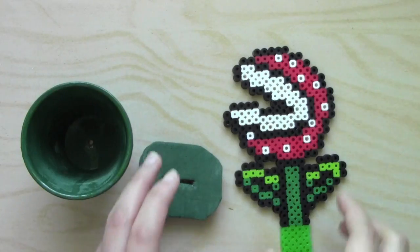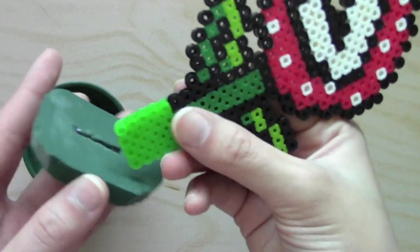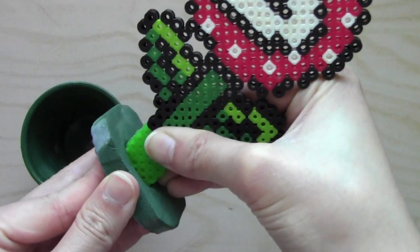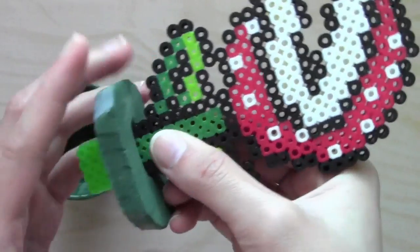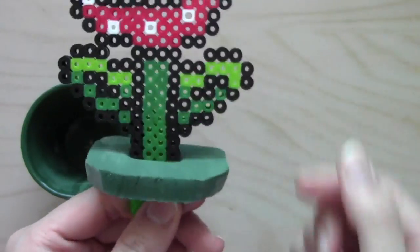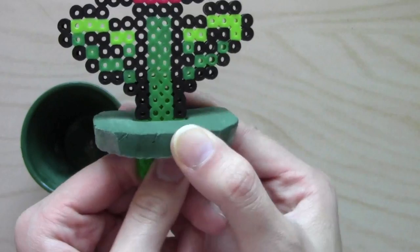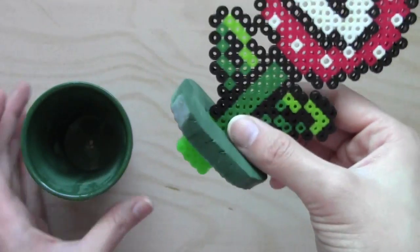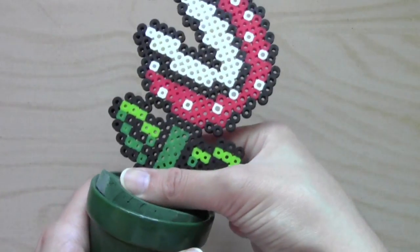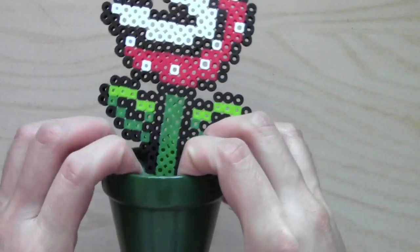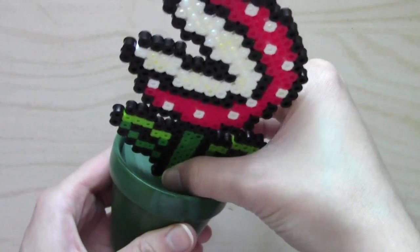Now it's time to assemble your final project. So what you do is stick it through. These roots are here, will be underneath here so you won't see at all. The top part of the stem will be seen and then all you have to do is stick it into the pot and your piranha plant will be standing.